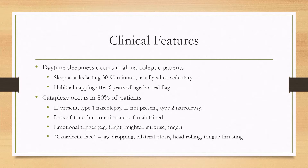Cataplexy occurs in 80% of patients. If it occurs, it is called type 1 narcolepsy, also known as narcolepsy with cataplexy. If it is not present, it is type 2 narcolepsy, or narcolepsy without cataplexy. Cataplexy is the loss of tone with normal consciousness — they can drop their head, lean forwards, or drop to the ground.